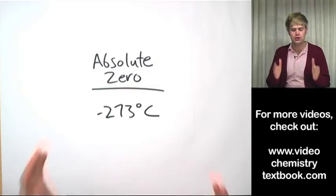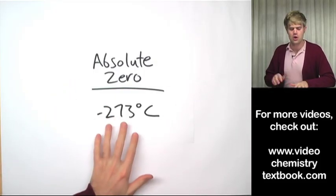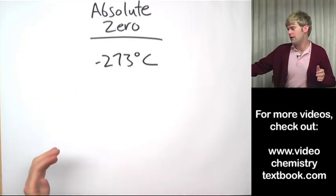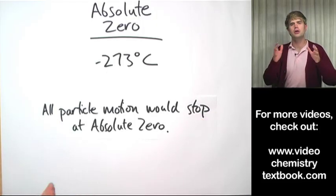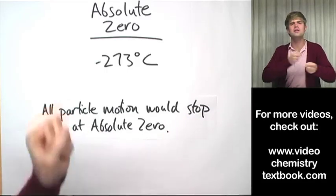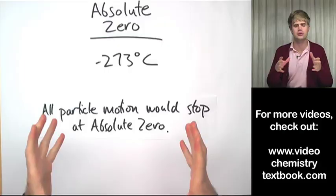So a few important things happen at absolute zero and that's why we're talking about it. The first is that absolute zero is so cold that all particle motion would stop at absolute zero. You know how I always say that particles, particularly gas particles, are always in constant random motion flying around, bouncing against the sides of whatever container they're in?